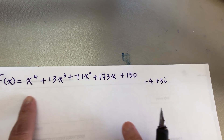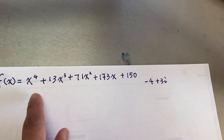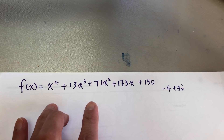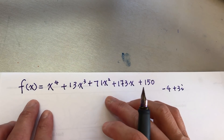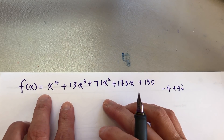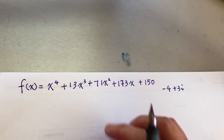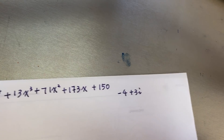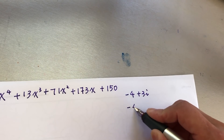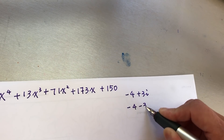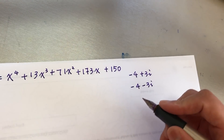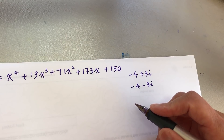So first we need to establish that this is a fourth-degree polynomial, and it can be factorized into four roots, four zeroes. And we know one zero. Then we know another zero, which is negative 4 minus 3i. Why do we know it? Because of the polynomial — I checked on video and I didn't see people explain this, so let me try my way of explaining.